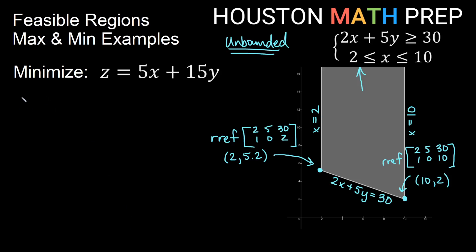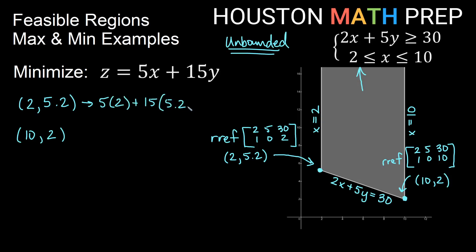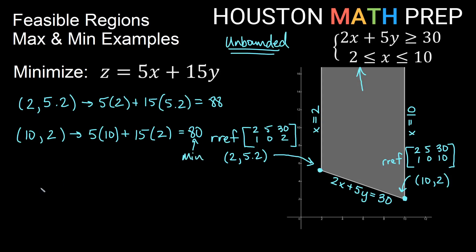With vertices 2 comma 5.2 and 10 comma 2, we plug into z equals 5x plus 15y. At 2 comma 5.2: 5 times 2 plus 15 times 5.2 equals 10 plus 78 equals 88. At 10 comma 2: 5 times 10 plus 15 times 2 equals 50 plus 30 equals 80. Since we want the minimum, we choose the smaller value: a minimum of 80 at the point 10 comma 2.